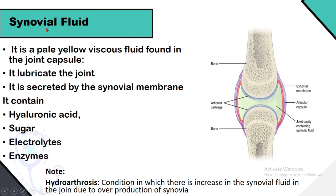Synovial fluid is a pale yellow viscous fluid found inside the joint capsule. It acts as oil in the joint, lubricating it. Synovial fluid is secreted by the synovial membrane and contains hyaluronic acid, sugar, electrolytes, and enzymes. A condition called hydroarthrosis occurs when there is an increase in synovial fluid due to overproduction.